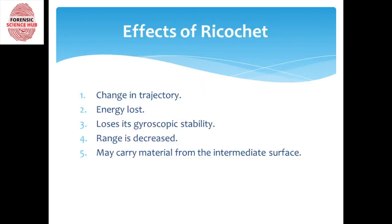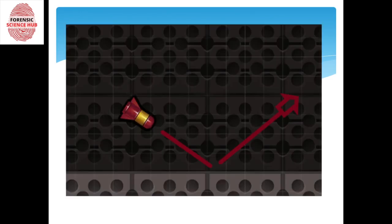Next, the bullet loses its gyroscopic stability. Obviously, whenever an object hits something in the middle of its path and then continues on another path, it's not going to have the same stability. It has bounced off, so it's going to be less stable than on the original path.